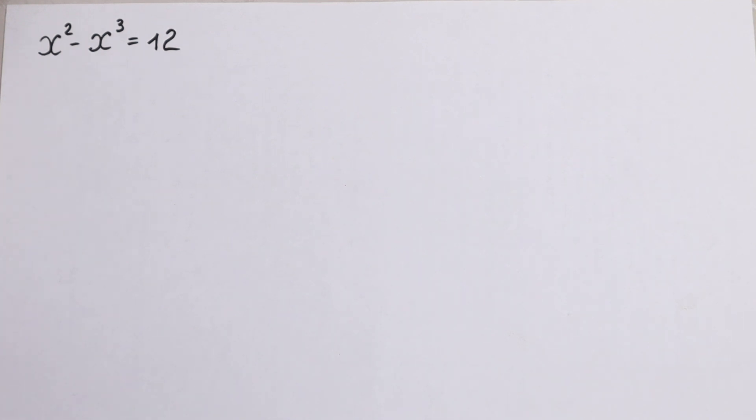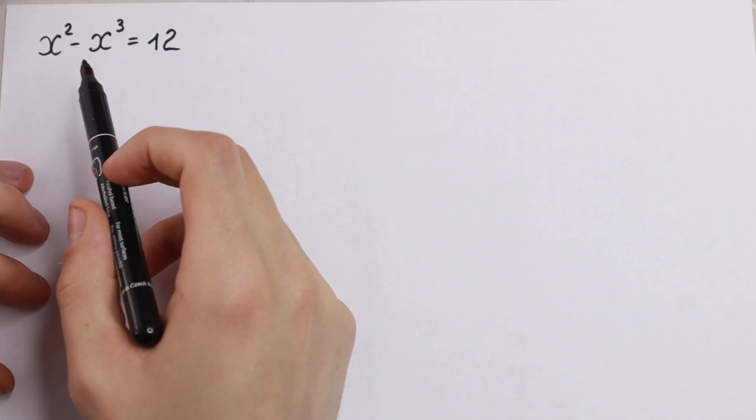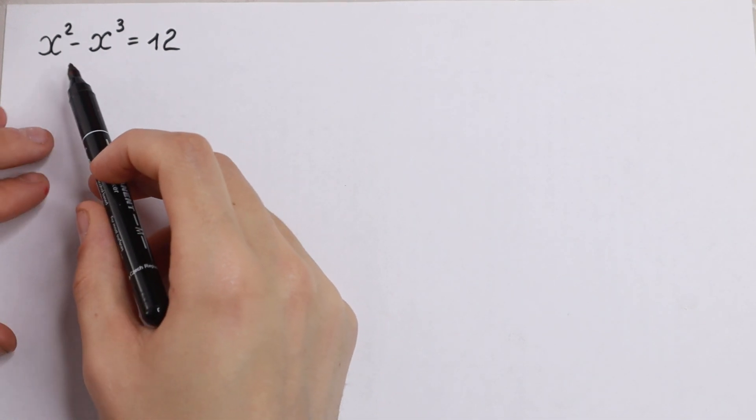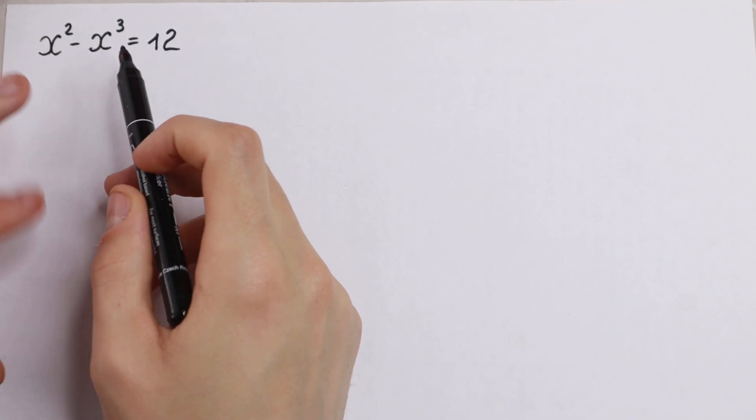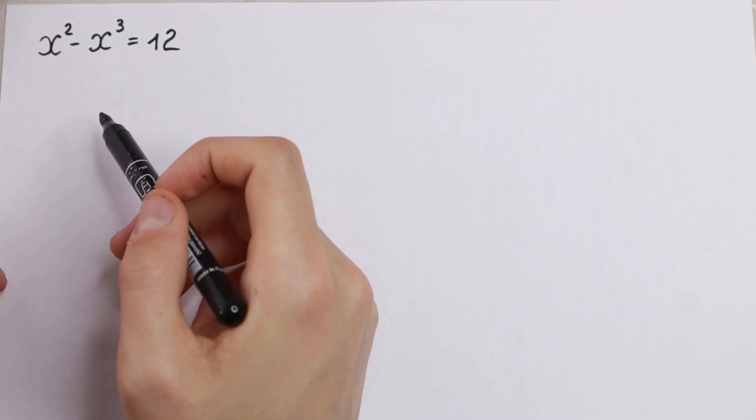Hello everyone, welcome back to MathMode. Today we have an interesting equation: x squared minus x cubed equal to 12.